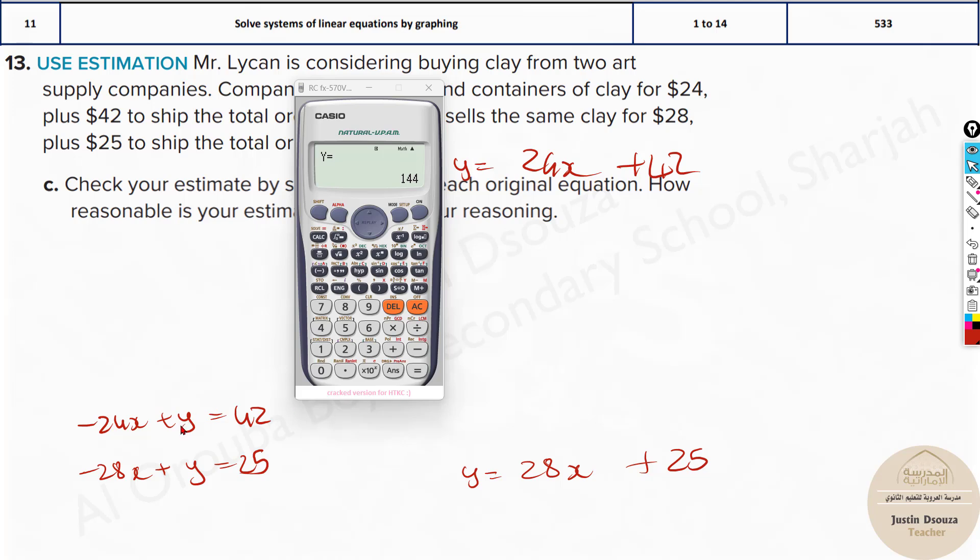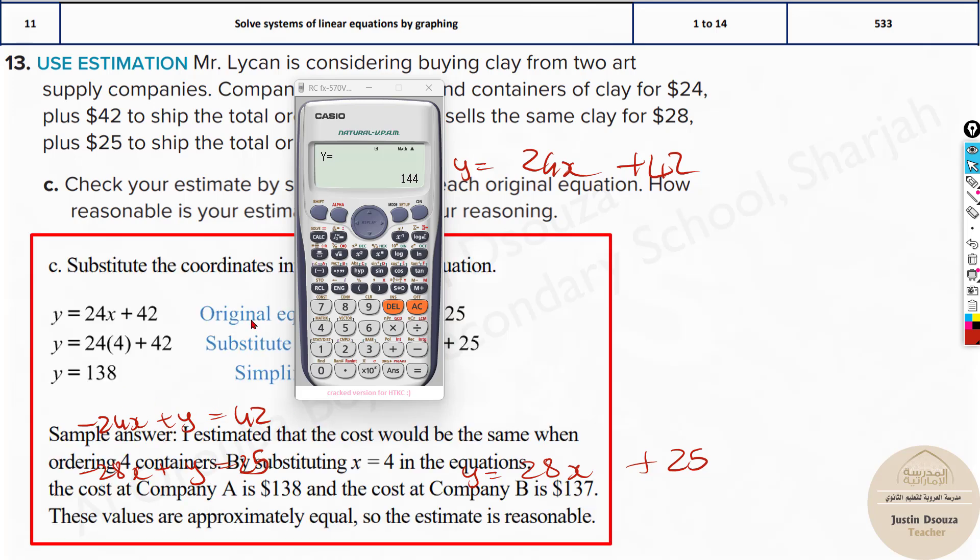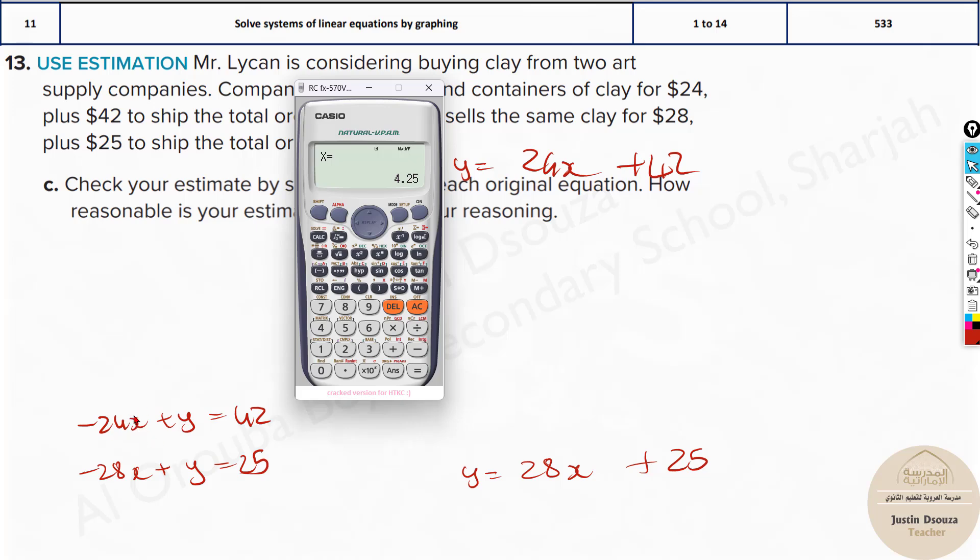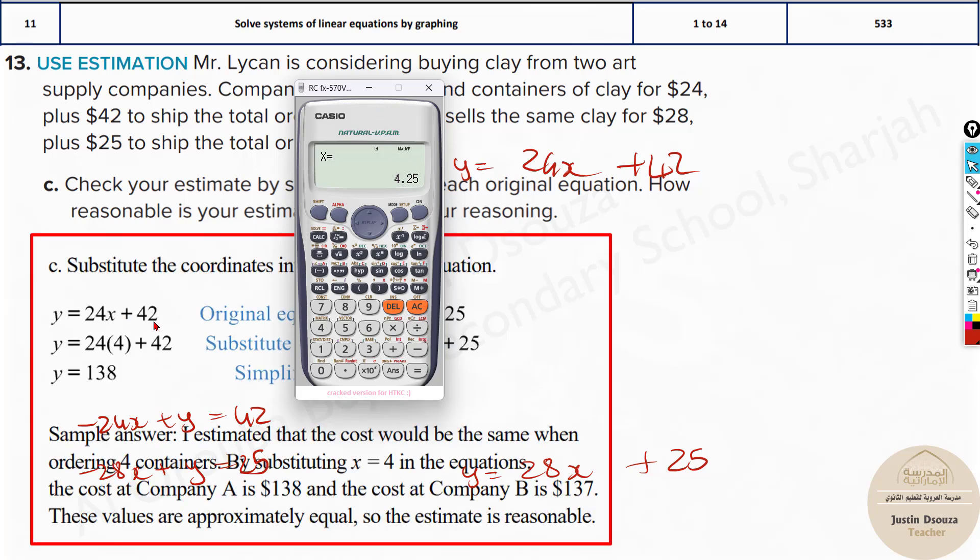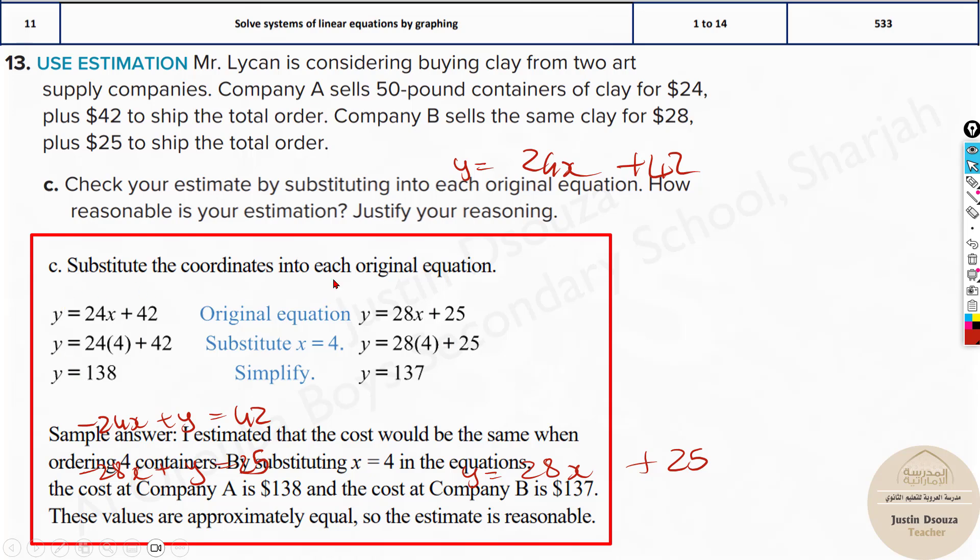You can also check by just... This is the check method. So whatever answers you get over here, if you put it back in the equation, if you put the x value, what we got x value, that is 17 by 4, it's 4.25. Put it over here in these two equations which we have got x. The y values for both must match. Now, if you're taking near to the value, if you're not taking exactly 4.25, if you put 4, it must be very close. You can see it's almost matching.